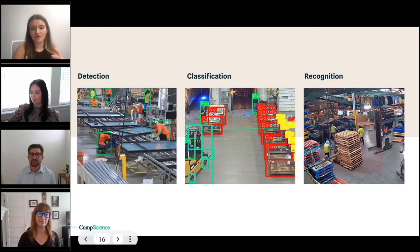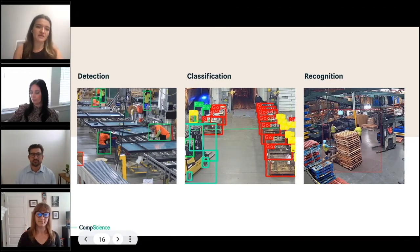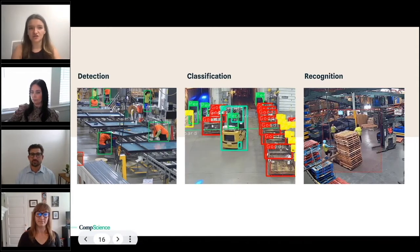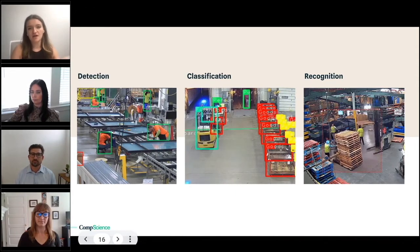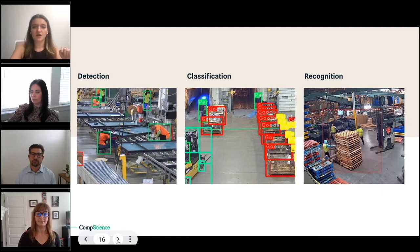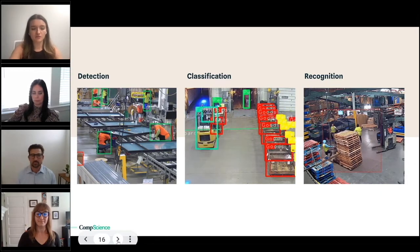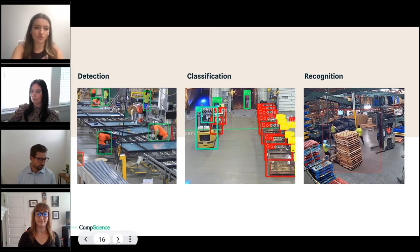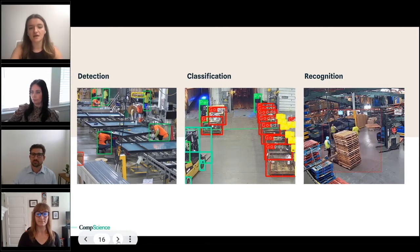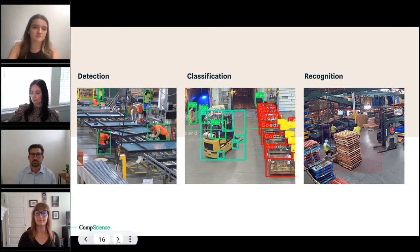Some tasks involved in computer vision would be detection, classification, and recognition. We'll go into those individually coming up, but these are really the crux of our product. These are what is getting us to a state of understanding the safety risks in a warehouse.